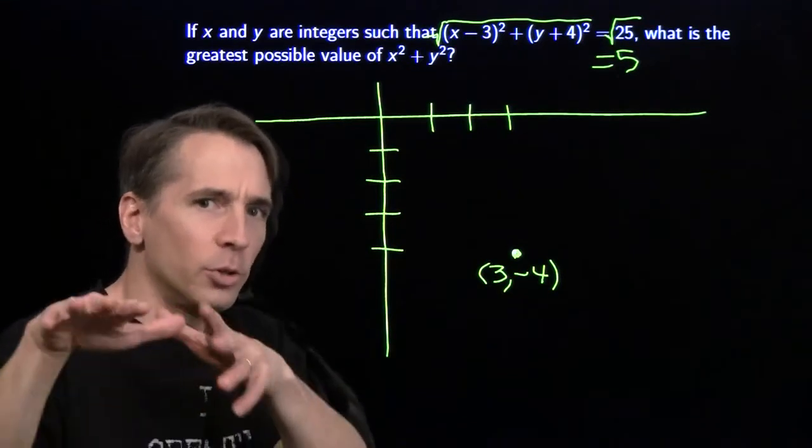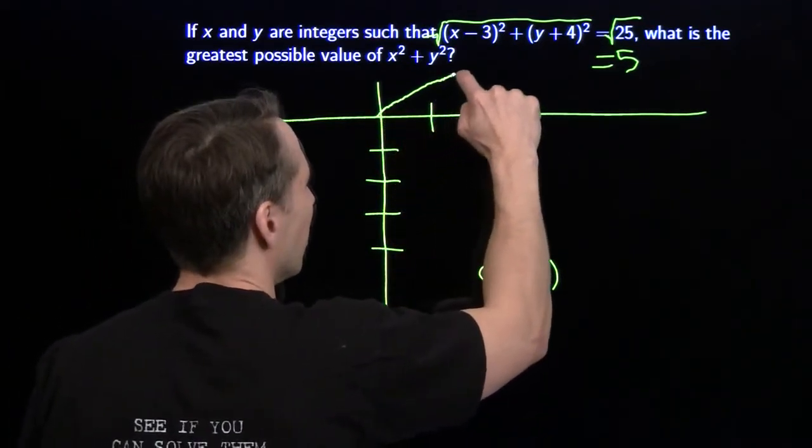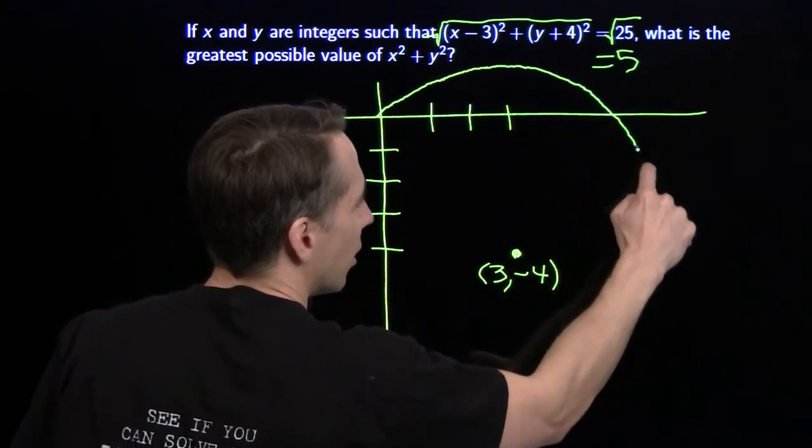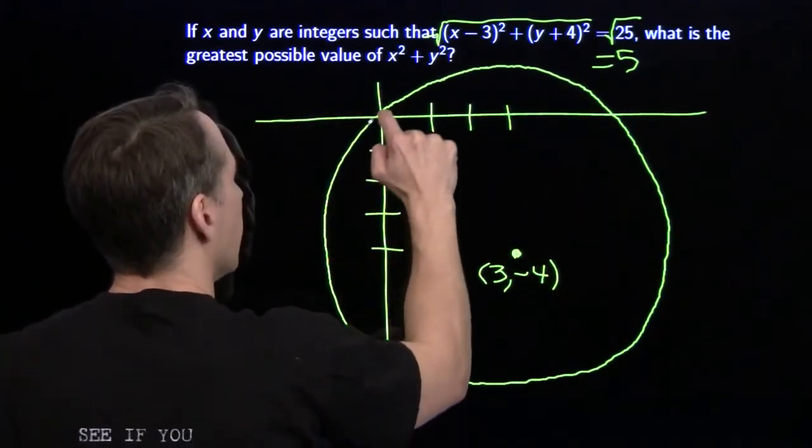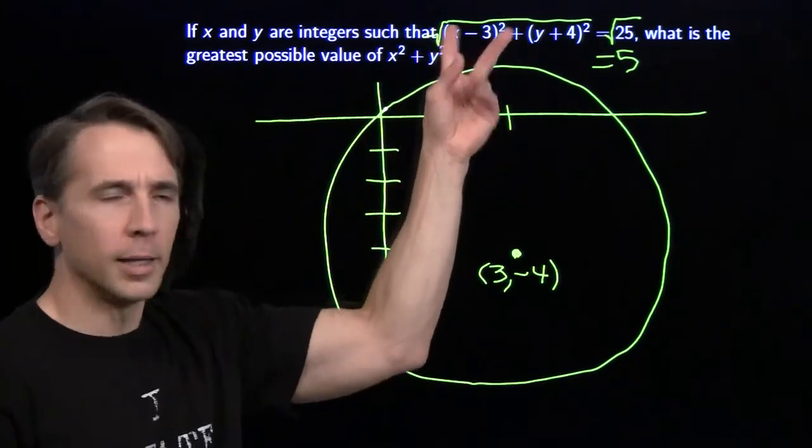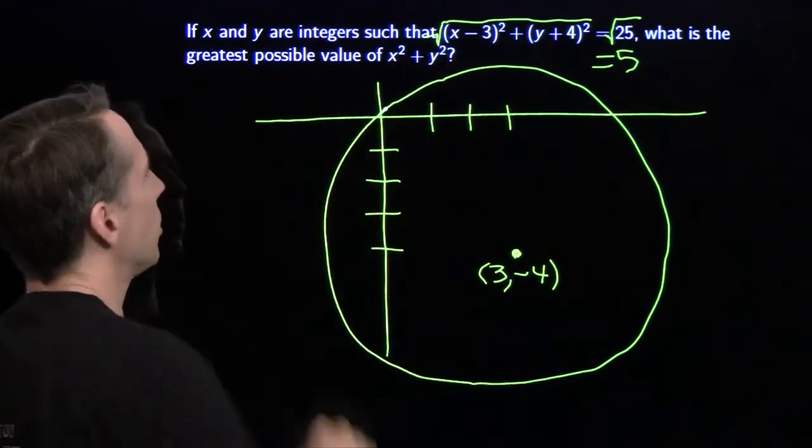Now, over 3, down 4, you know your 3, 4, 5 right triangles. That means this circle goes through the origin. That's interesting. Alright, so you've got this circle here. And all the points X, Y that satisfy this equation live on this circle.